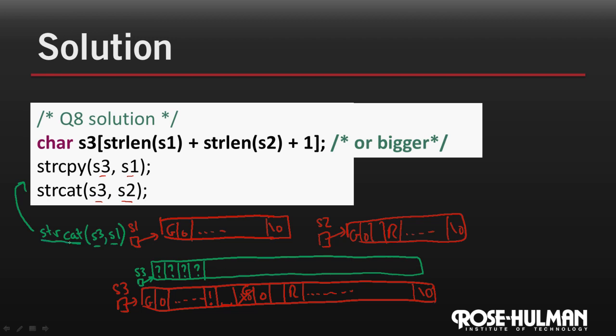So if you really wanted to use that, there's one way to get around that, and that's to take s3 and set the first character equal to the null character. And if you do that first, then you could use a couple of string concatenates.